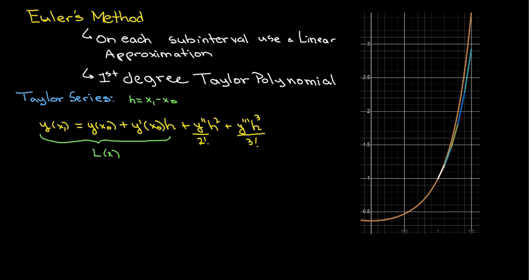All right, so what we used was just up to the linear term, so that was our linear approximation in Euler's method.